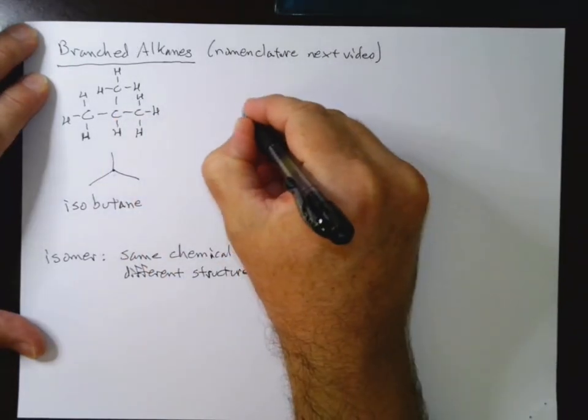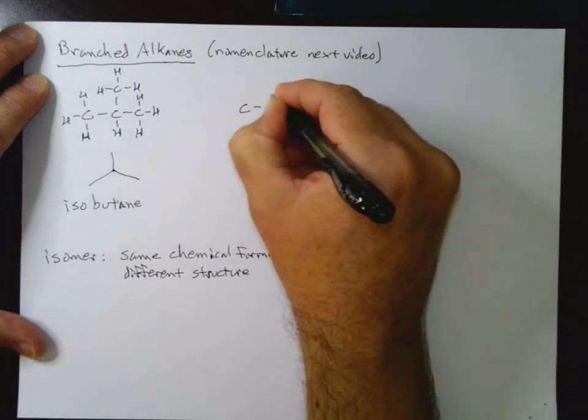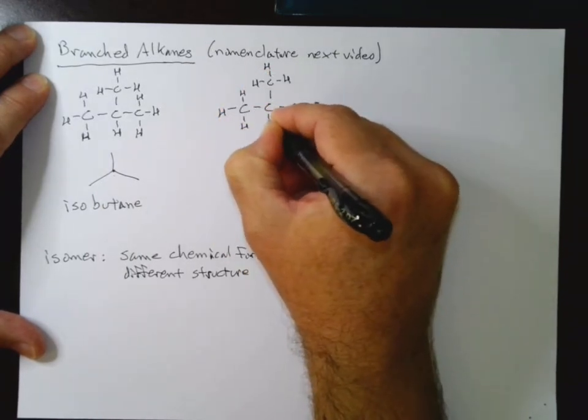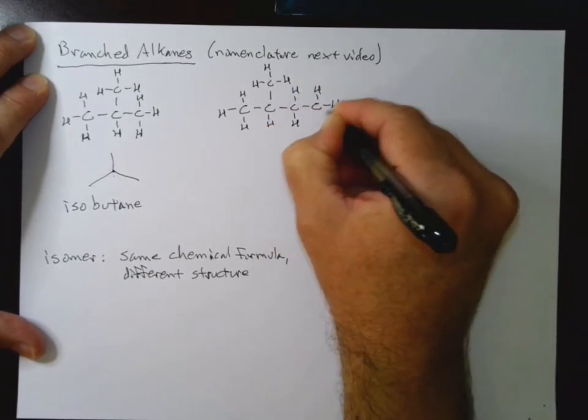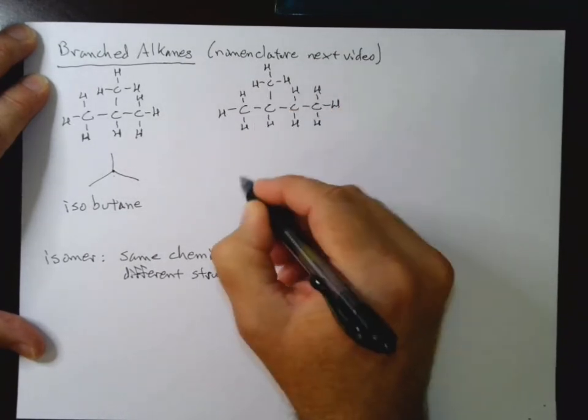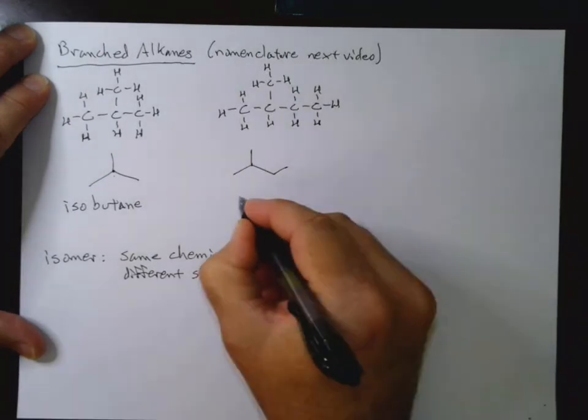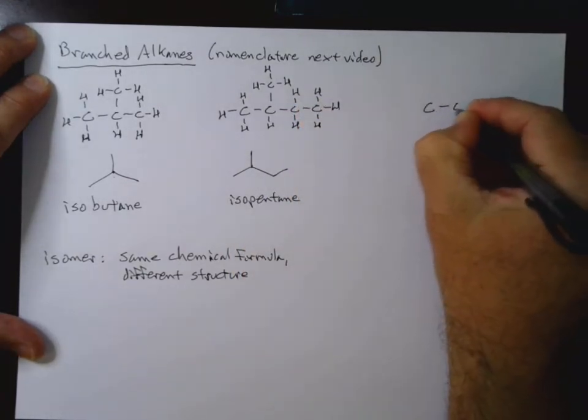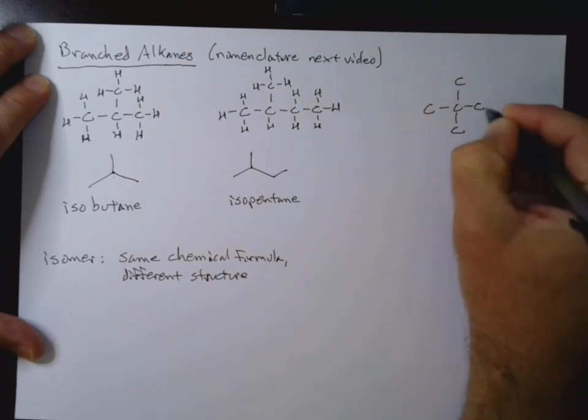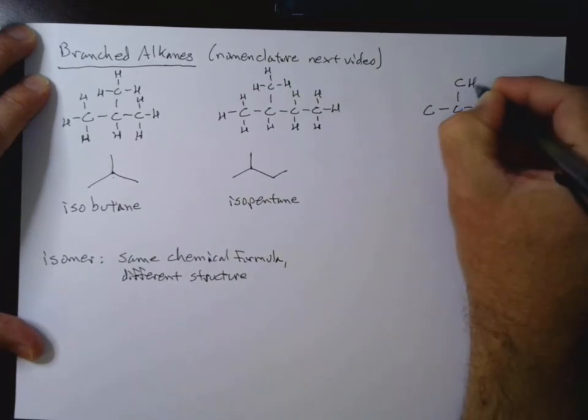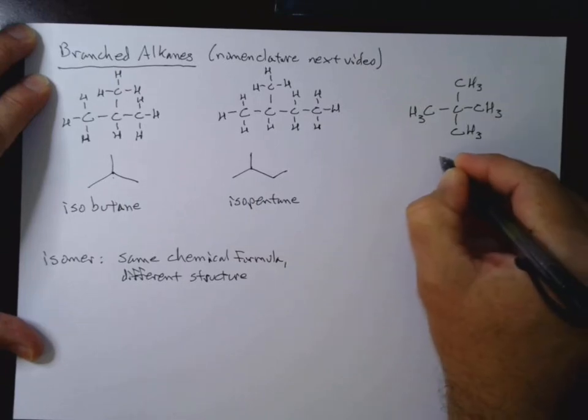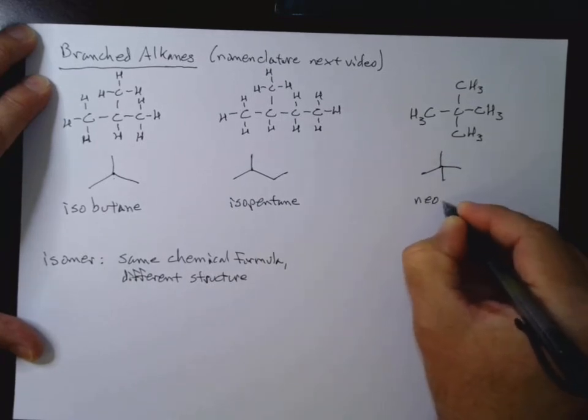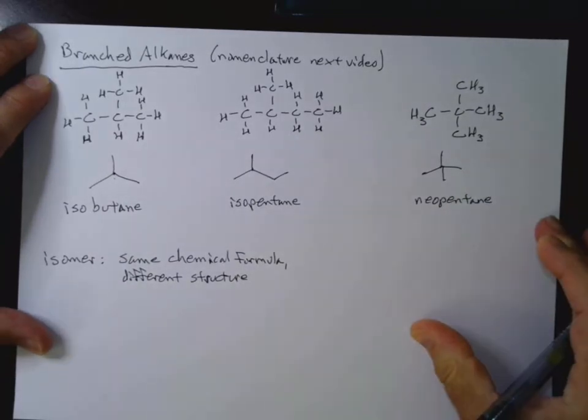But for right now, we're just going to look at how molecules with the same chemical formula, how their bonds are connected differently, or how the atoms are connected differently, I should say. Now we could do the same thing with pentane. So this is isopentane. Now there's one more that we could have. With five carbons, we could have a carbon in the middle with no hydrogens on it. So this would be one, two, three, four, five total, and we call this neopentane. Neo for new.